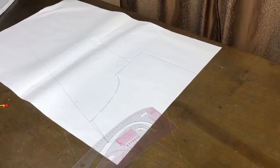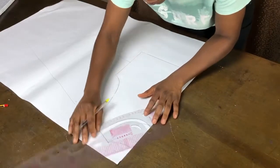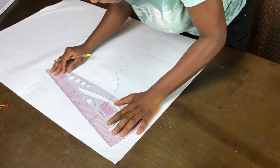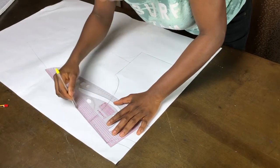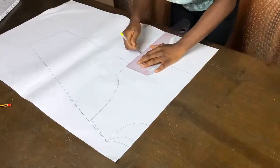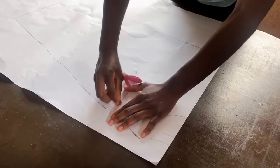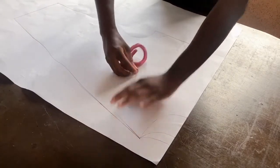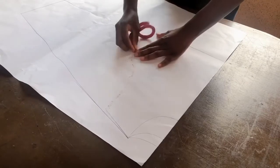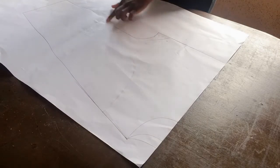What you just did right now is that you have drafted the front and the back bodices together. So because we're going to need to work on the front I'm going to trace out the front pattern. You can also use a different colored marker or a pen to differentiate between the one you want to trace and the one you want to leave. For the sake of this tutorial I'm tracing out the front pattern.